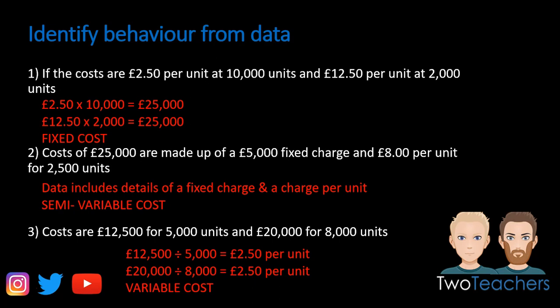What will change with a variable cost is the total variable cost — it goes up as we make more. Whereas with a fixed cost, the total price always remains the same, but the unit price varies according to the amount we are actually producing. So when we produced 10,000 items the price per unit was £2.50, but when we only produced 2,000 units the unit price for the fixed cost increased dramatically to £12.50.